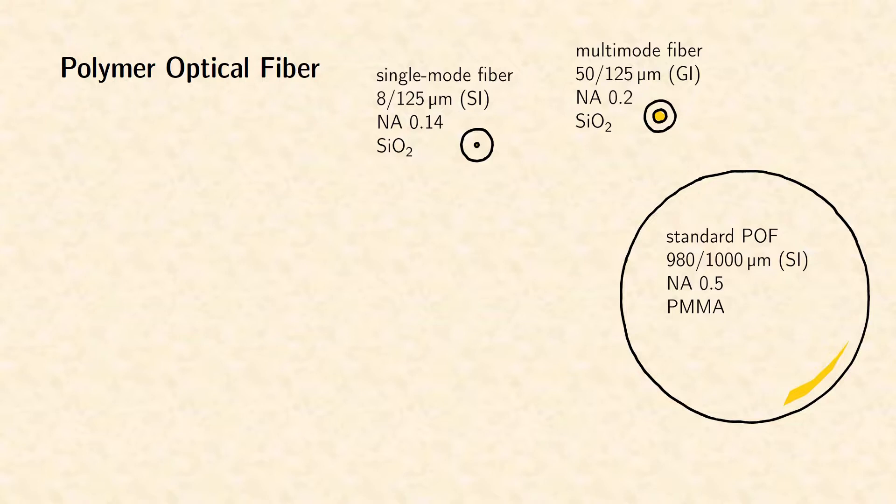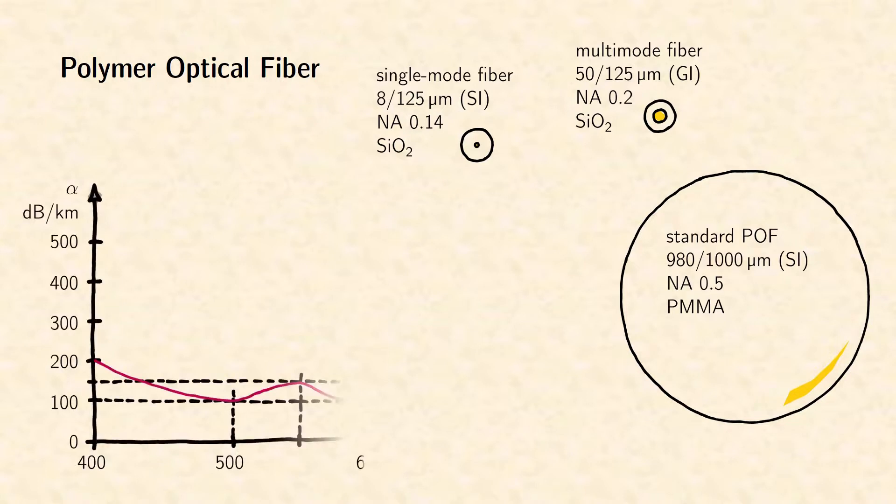Furthermore, its numerical aperture of 0.5 is very large, which allows for efficient coupling of LED radiation into the fiber. The fiber core consists of PMMA. The spectral attenuation of polymer fibers is about three orders of magnitude higher than that of silica fibers. Therefore, the usable length of such fibers is around 100 m compared to 100 km for silica fibers.